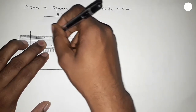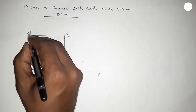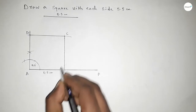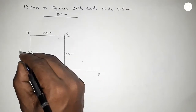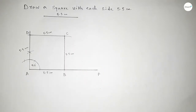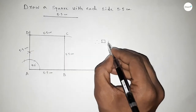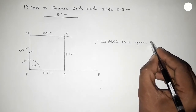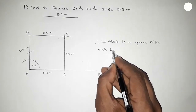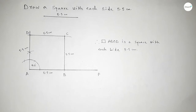Taking these points as B, C, and D — this side is 5.5 centimeters, this side is also 5.5 centimeters, this side is 5.5 centimeters, and this side also 5.5 centimeters. Therefore rectangle ABCD is a square with each side 5.5 centimeters. This is the process to construct a square with each side 5.5 centimeters. That's all — thanks for watching. If this video is helpful, please share.